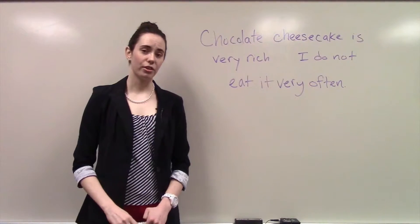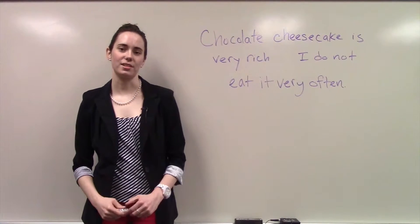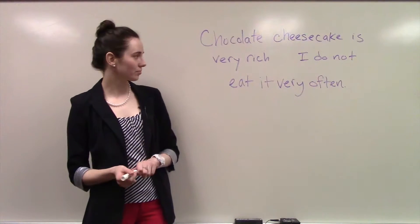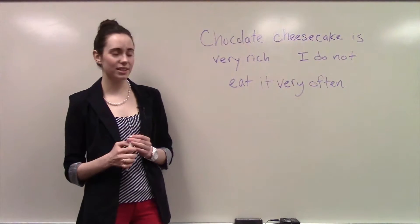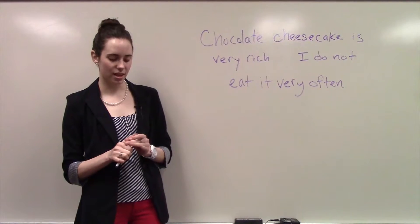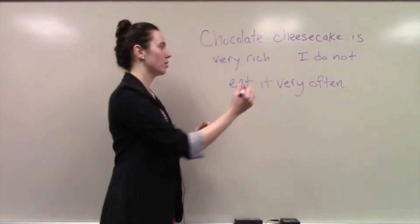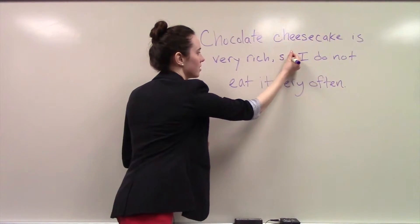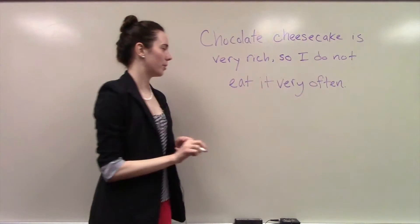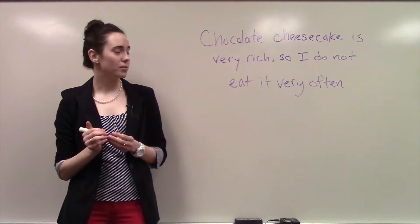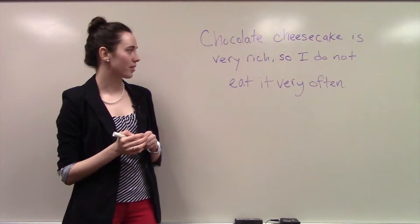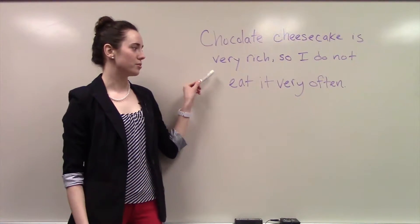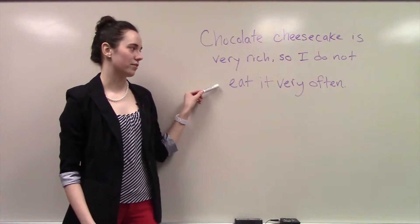The third way to join two independent clauses is to use a comma and coordinating conjunction. For our example sentence, a possible conjunction would be the word so preceded by a comma. So now the two independent clauses are put together and read: chocolate cheesecake is very rich, so I do not eat it very often.